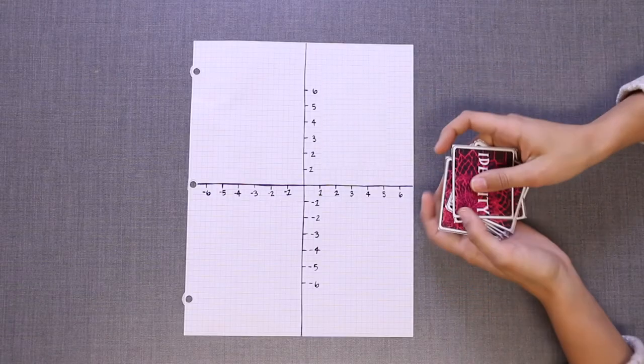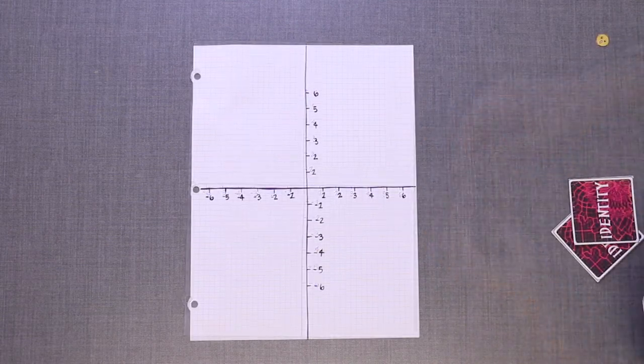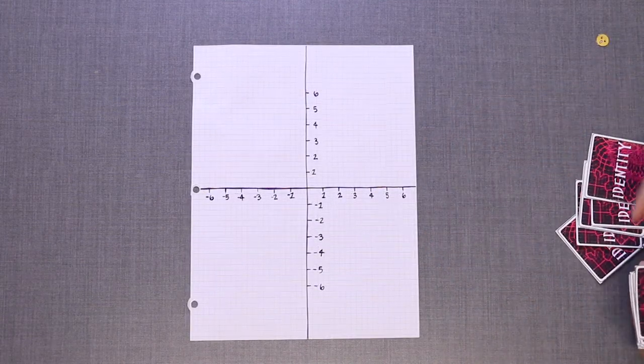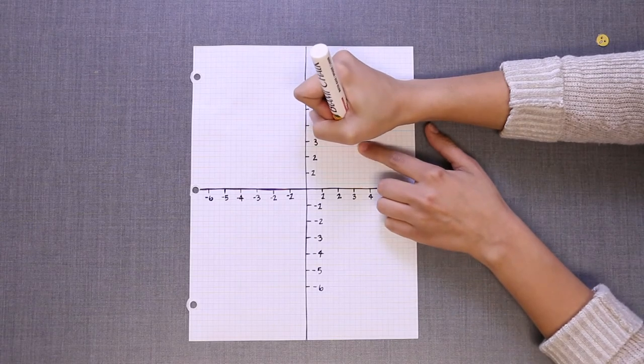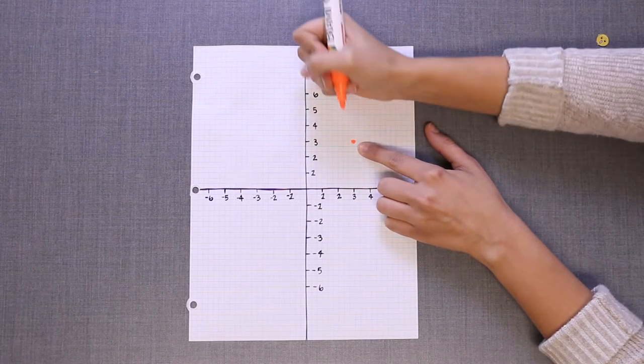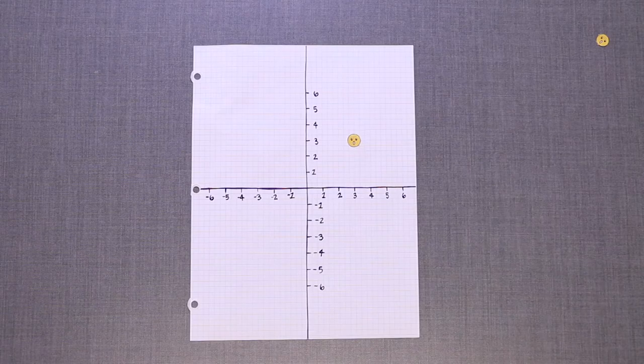To set up the game, shuffle the deck and deal five cards to each player. The player on the dealer's left picks a random point on the coordinate plane. This is the identity. Place your game piece on your coordinate plane at this point.